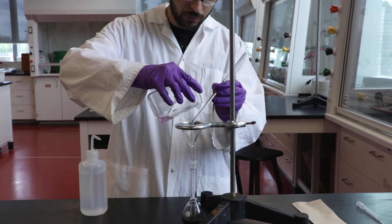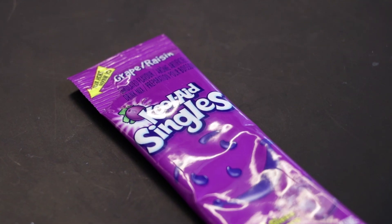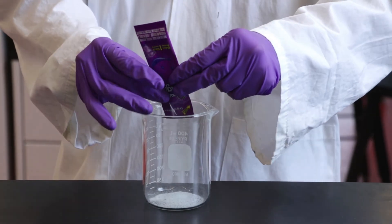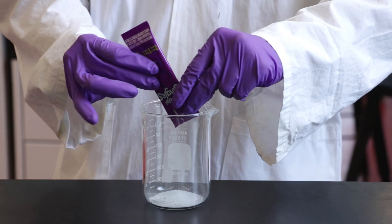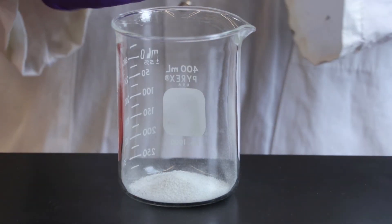You will use quantitative transfers often when working in the chemistry laboratory. To begin we add the solid into a 400 milliliter beaker. Note that the volume markers on the beaker are for estimation only and give an approximate volume within 5 milliliters of the actual volume.